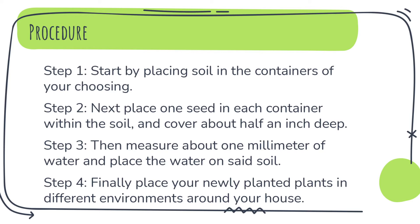Procedure: step one, start by placing soil into the containers of your choosing. Step two, place one seed in each container within the soil and cover about half an inch deep. Step three, measure about one millimeter of water and place the water on the soil.